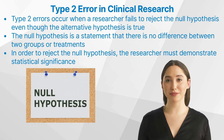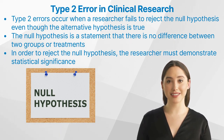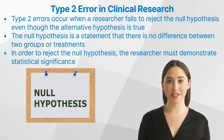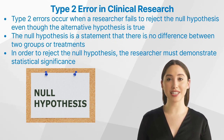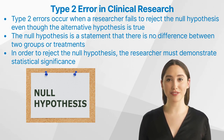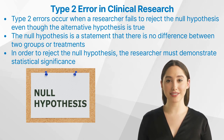Type 2 errors occur when a researcher fails to reject the null hypothesis — for example, the hypothesis that there is no difference between two groups or treatments — even though the alternative hypothesis is true. This type of error can lead to incorrect conclusions, which can have serious implications for clinical research. For example, an effective treatment will not be available on the market.